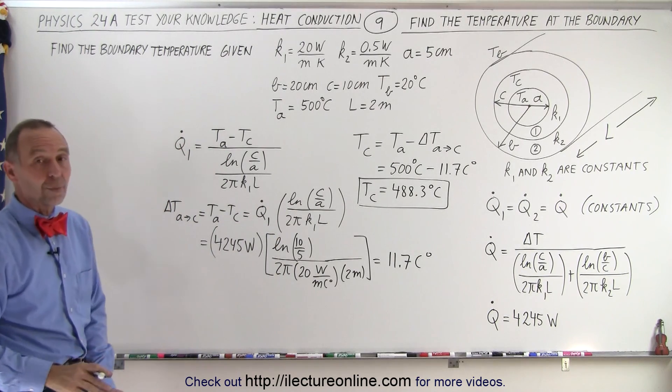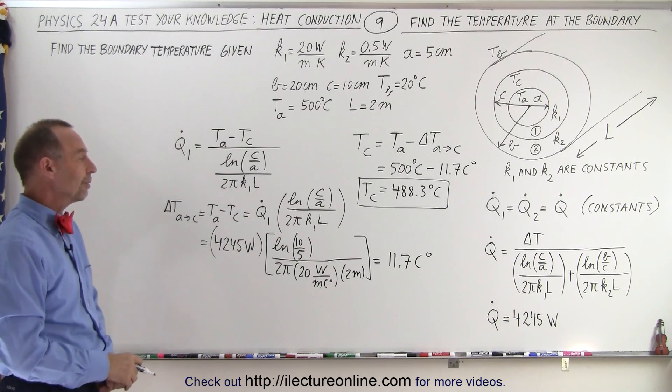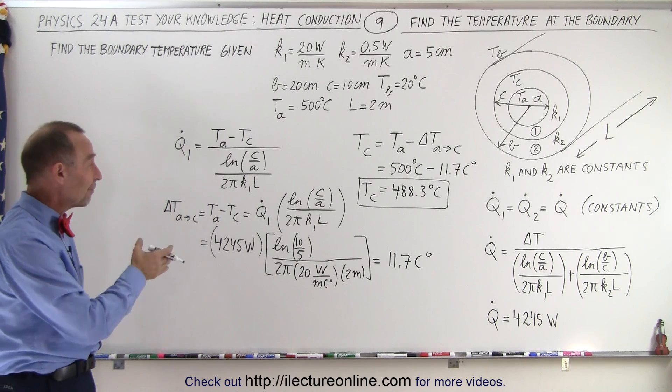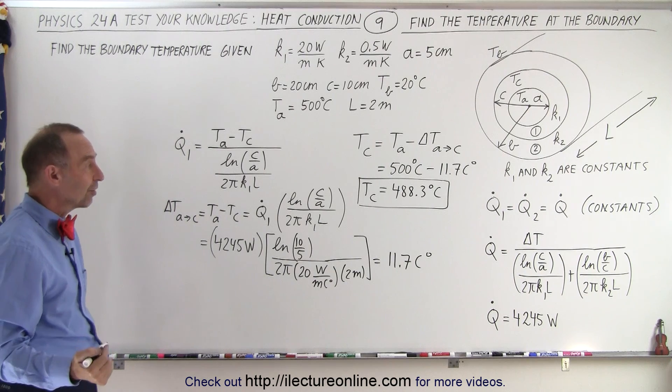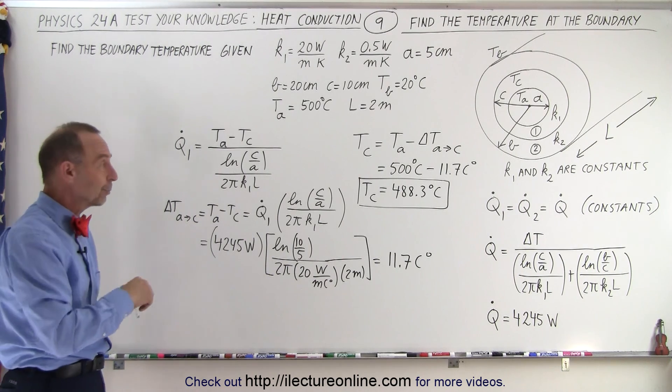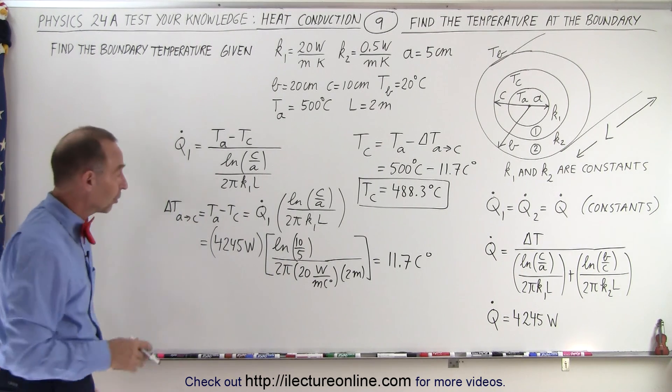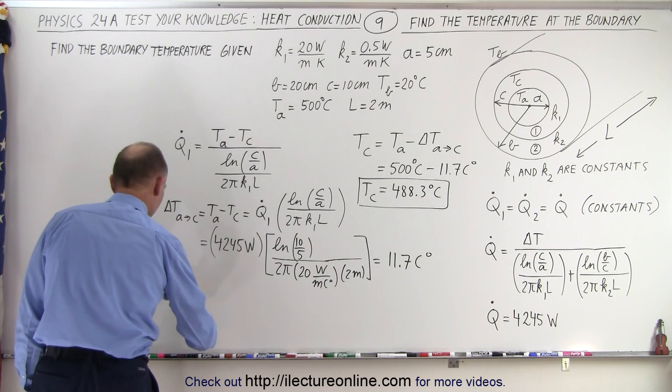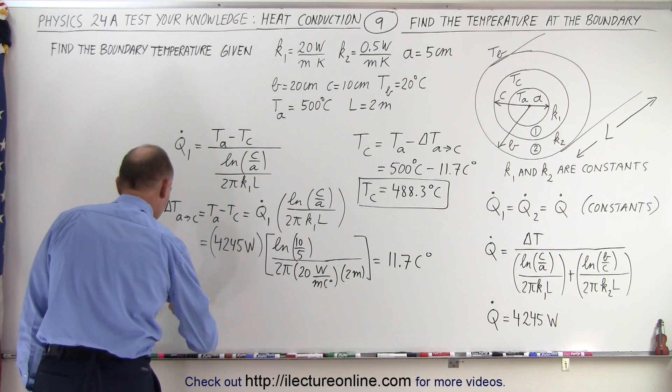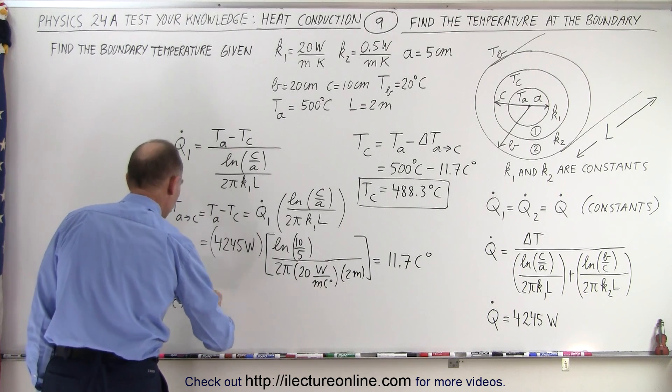Now we can say we're satisfied with that, and we don't need to go any further, or what we can do is we can calculate the same for the other side, for the second layer, and work ourselves backwards from the outside temperature to see if we get the same results. So that's a good check. So let's find that the delta T from C to B.